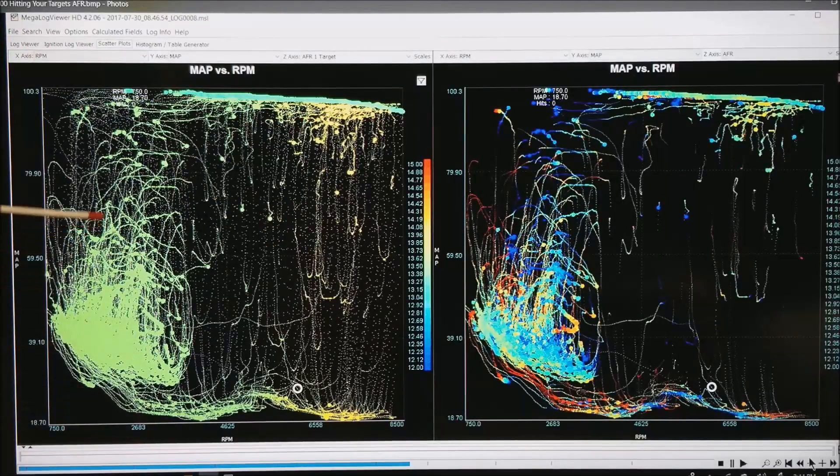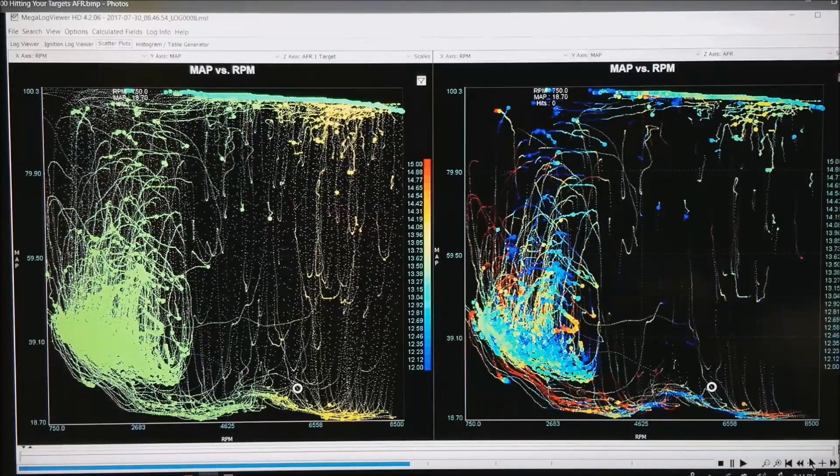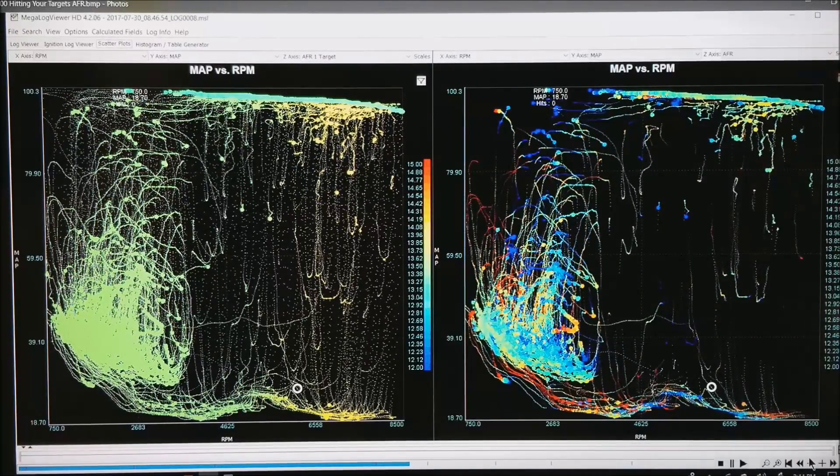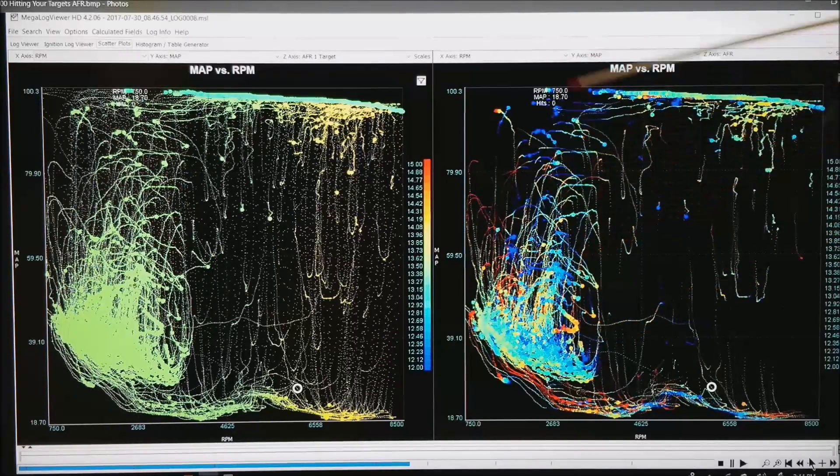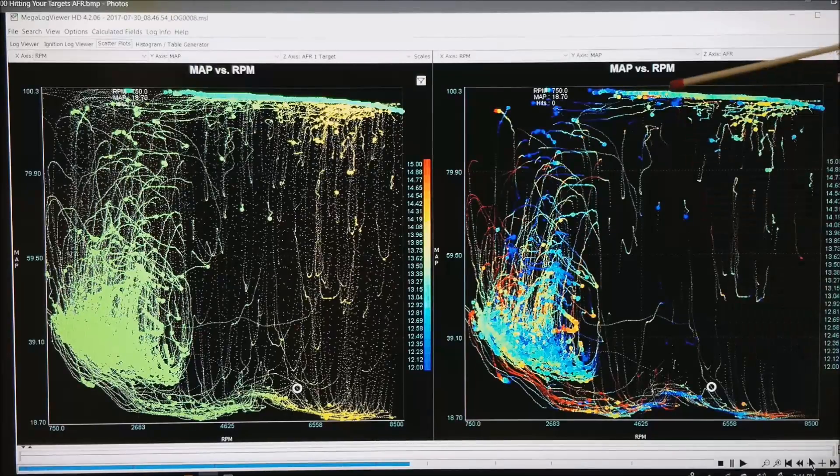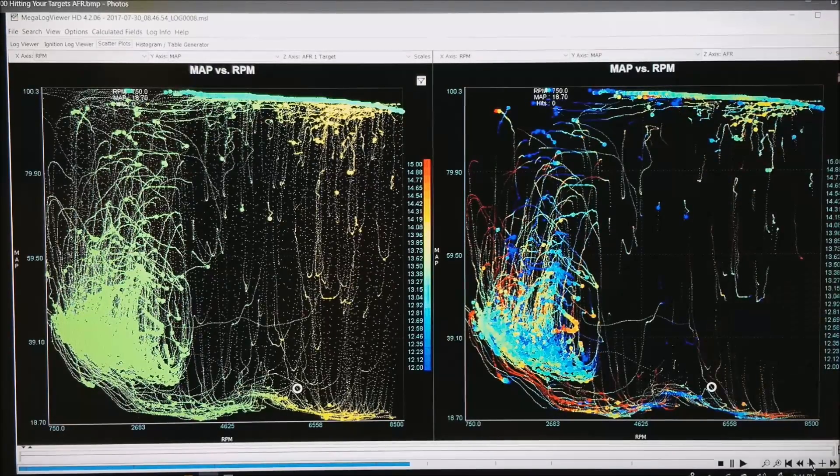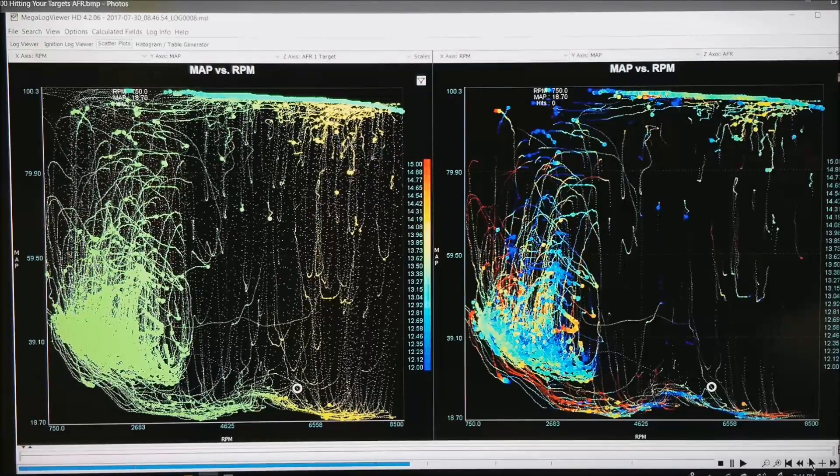But what we are shooting for is the same pattern and colors on both sides. On the right side what I have done is this is the actual AFR. And you can see I am a little bit rich here, a little bit rich here. On the power it is not too bad. For some reason I have got a little blue spot right there I might want to deal with. But we are getting in the ballpark.